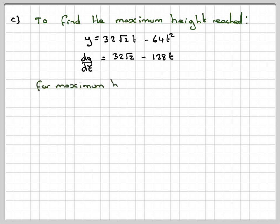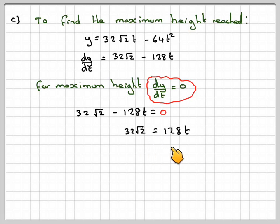For maximum minimum, we need to put dy/dt equal to 0, so we'll put that equal to 0. So we get 32√2 - 128t equals 0. So 32√2 equals 128t. So t will be equal to √2 over 4. 32 over 128 is 1 quarter, so it becomes √2 over 4.